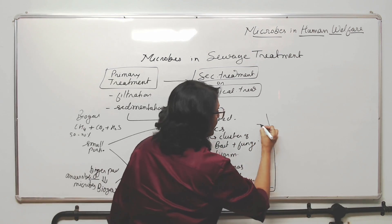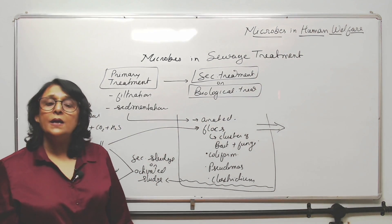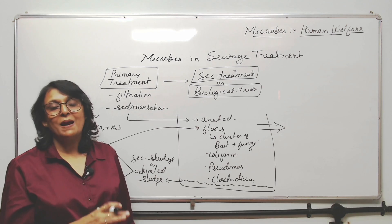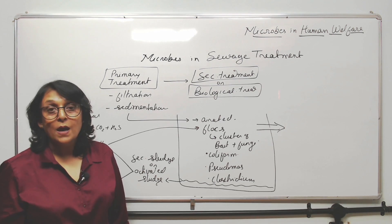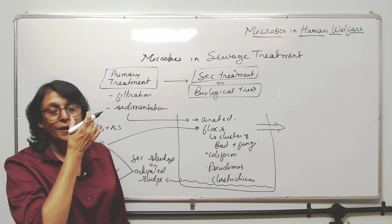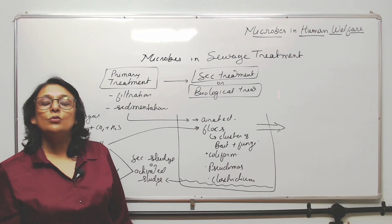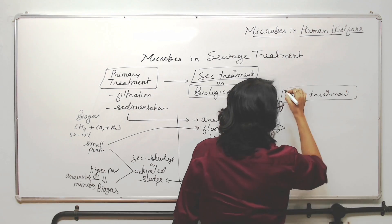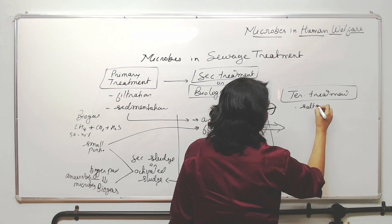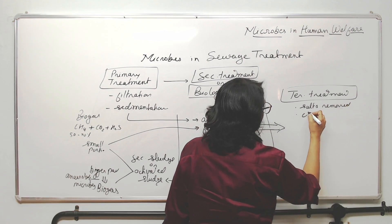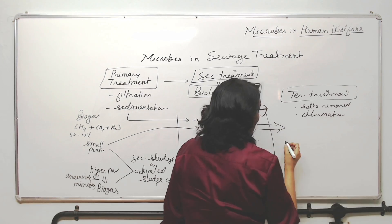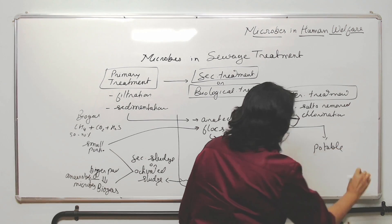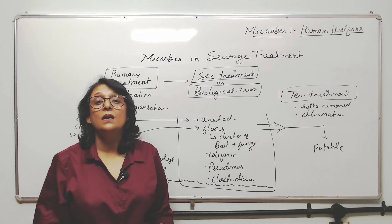The liquid obtained after secondary treatment is without organic matter — you can dump it into a river, as no organic matter is being added. However, this is not fit for consumption; you cannot drink this water. If you want to drink it, it has to go through tertiary treatment. In tertiary treatment, extra salts are removed and chlorination is done. After this, the water is fit for consumption — it is potable, meaning you can drink this water.